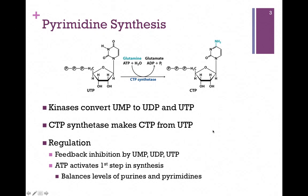The regulation of the pathway is feedback inhibited by the products — by UMP, UDP, and UTP. ATP activates the first step in synthesis, and this helps to balance the level of purines and pyrimidines. Remember, ATP is a purine. If ATP levels are high, we want to activate the synthesis of pyrimidines so we can keep those levels balanced, and that's how we control the levels of the four types of nucleotides.